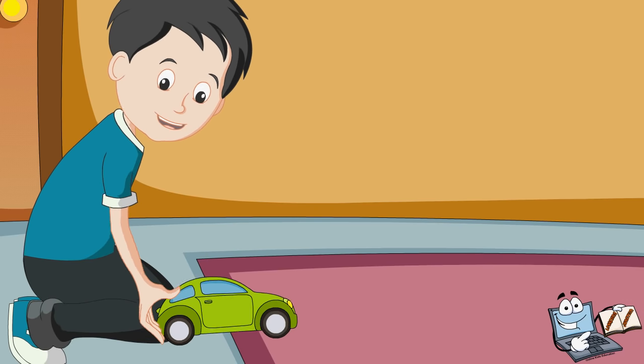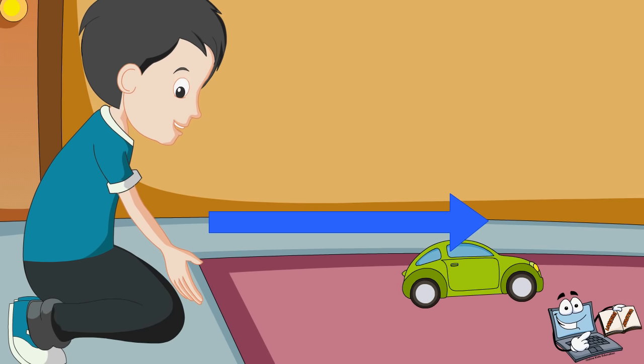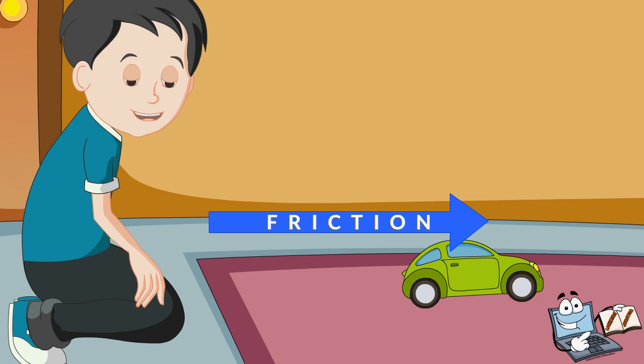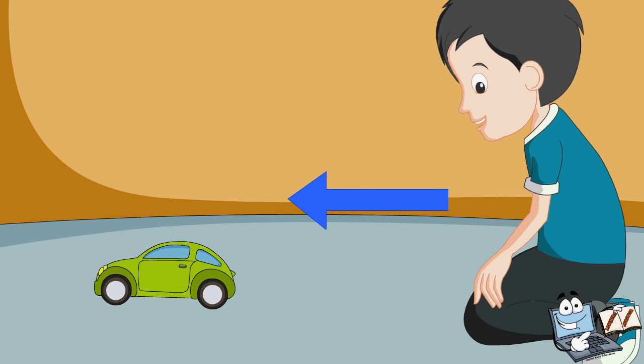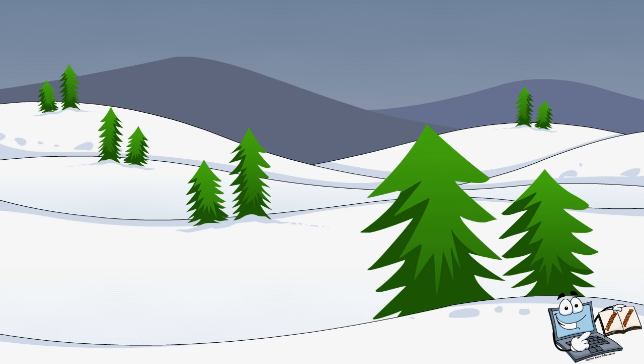Let's learn first about Friction. When you push your toy on a carpet, it slows down and stops after some time. The force which acts on it to slow it down is called the force of friction. Now push the toy on the smooth floor. Does it go further? Yes, because the force of friction is less on the smooth floor.